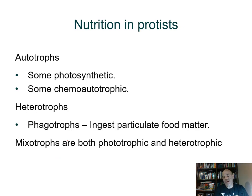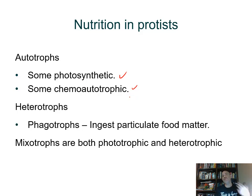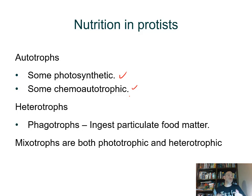For nutrition in protists, there are going to be autotrophs that make their own food — photoautotrophs and chemoautotrophs. These are modes of nutrition we already mentioned when we studied the chapter on bacteria. There are also photolithoautotrophs mentioned in that prior chapter on bacteria, so make sure you go and review that.